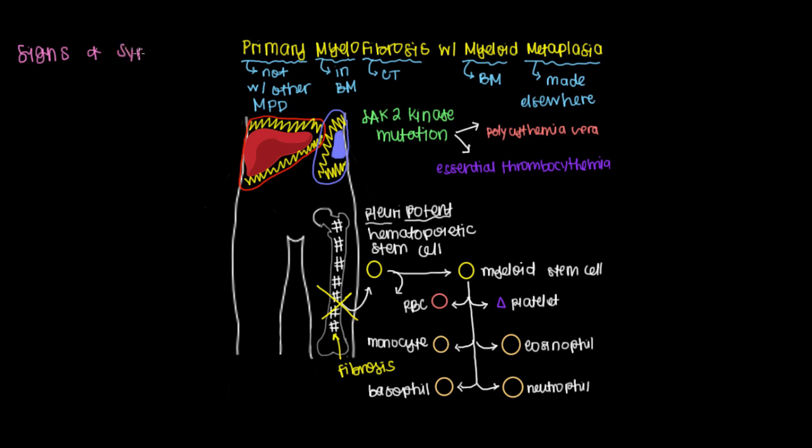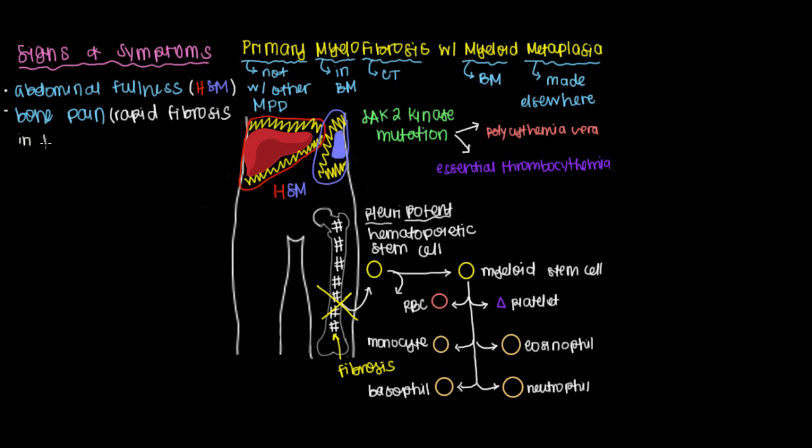And this will produce certain characteristic signs and symptoms such as abdominal fullness, which is associated with the growth in your spleen - we call this situation splenomegaly. And when this happens in the liver as well, giving you hepatomegaly, you have in total what's referred to as hepatosplenomegaly. You can also get bone pain because rapid fibrosis in the bone marrow will impinge on the nerves there.